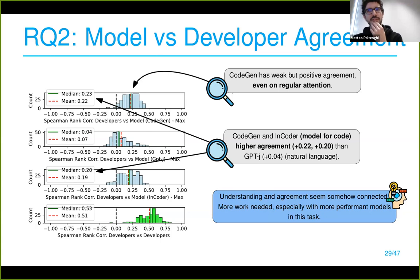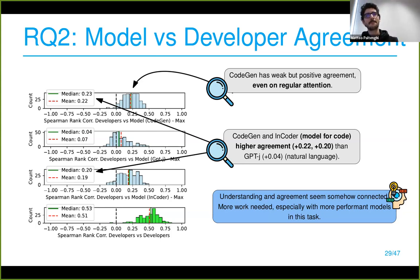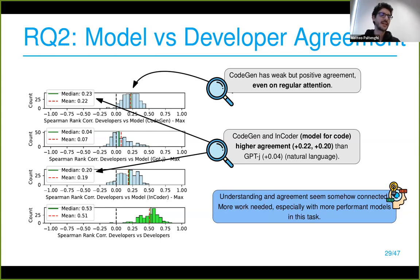CodeGen and InCoder achieve the highest agreement with humans, likely because they have seen more code than GPT-J, which was trained on natural language. The way models trained on natural language look at code probably differs. Understanding and agreement seem somehow connected, but more work is needed — especially with more capable models like LLaMA — to understand how their attention maps compare to humans.